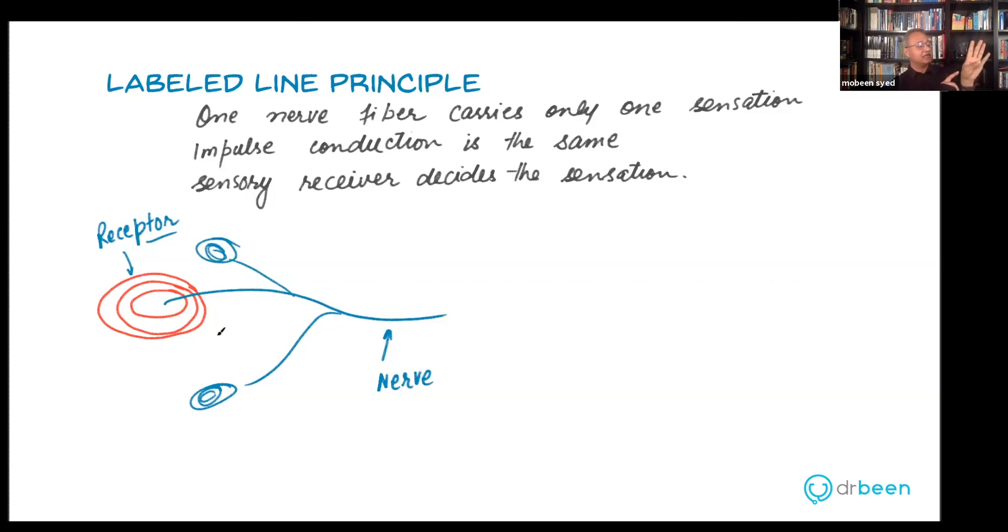So I cannot say that a nerve that comes in here, let's say in my hand, all of a sudden when it branches, every branch has a different kind of receptor on it. That's not going to happen. If a nerve comes in and branches and the branch has Pacinian corpuscles, then all the branches are going to have Pacinian corpuscles.